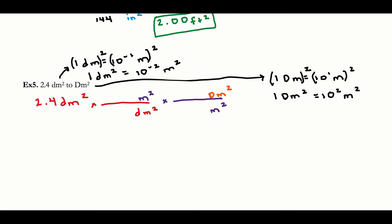I plug in: 1 decimeter squared on bottom, 10 to the negative second meter squared on top; 1 decameter squared on top, 10 to the second meter squared on bottom. I take 2.4, multiply by 10 to the negative second, then divide by 10 to the second. My answer is 2.4 times 10 to the negative 4 decameters squared. Sig figs: 2.4 has two sig figs; 2.4 still has two sig figs. Units: decameters squared.